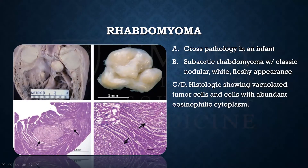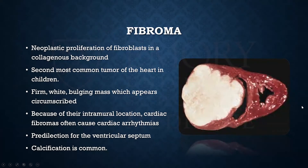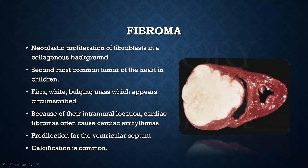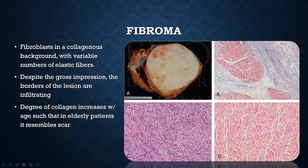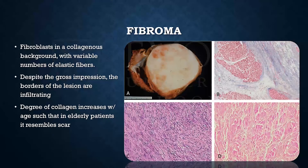Fibromas are neoplastic proliferations of fibroblasts — part of the core structure of many connective tissues. These are well circumscribed but can invade into the myocardium and often do. They're usually involved at the ventricular septum, and calcification is very common. When born, these have a strong predominance of fibroblasts encased in collagen. As you get older, the proportion of collagen increases to the point where these tumors can mimic scar in older patients.